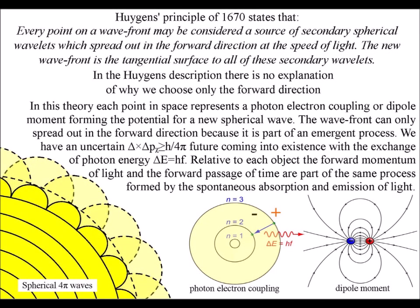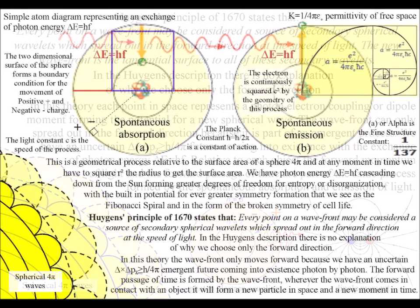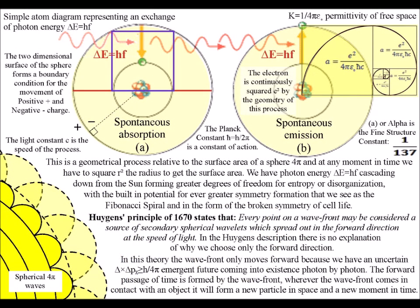In this theory we have to square the radius of the sphere because the process is relative to the two-dimensional spherical surface.